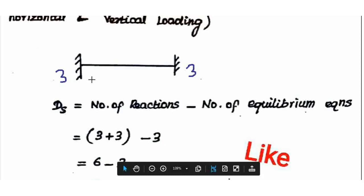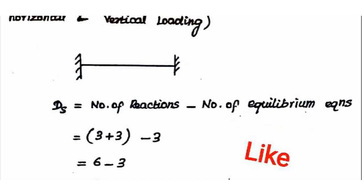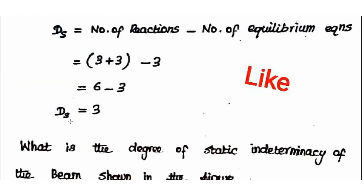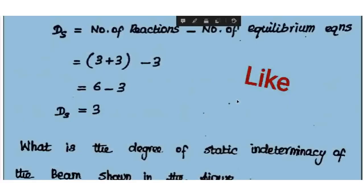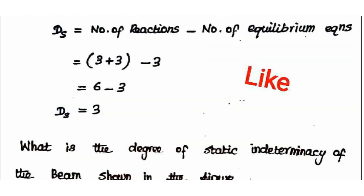For a fixed beam with horizontal and vertical loading, static indeterminacy = 3. If we consider vertical loading only, each fixed end contributes 2 reactions (vertical force and moment), so total reactions = 2 + 2 = 4. Number of equilibrium equations for vertical loading = 2. Degree of static indeterminacy = 4 − 2 = 2 for vertical loading only. So for a fixed beam: indeterminacy = 3 (combined loading) or 2 (vertical loading only).